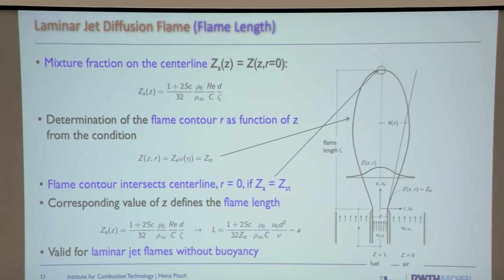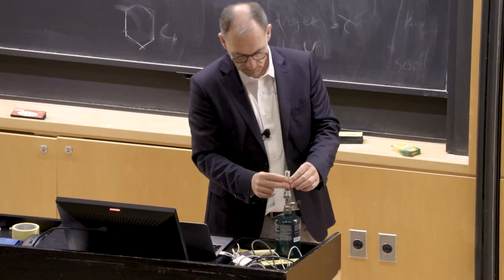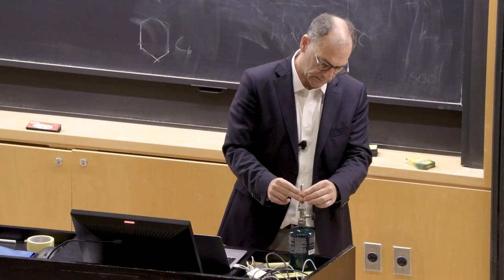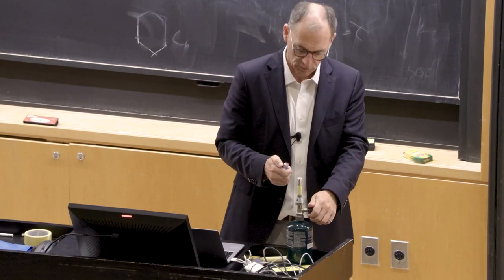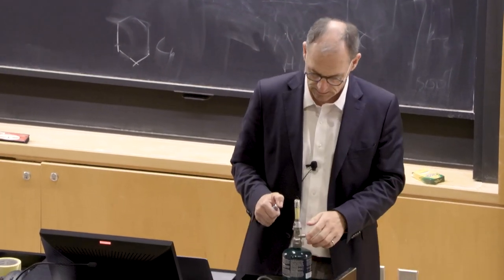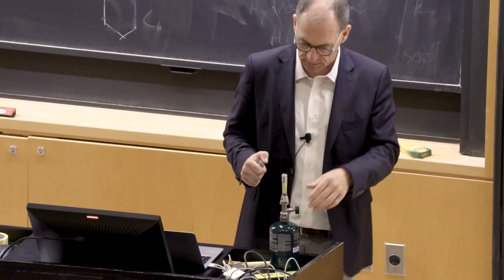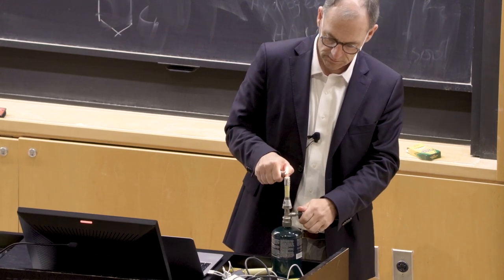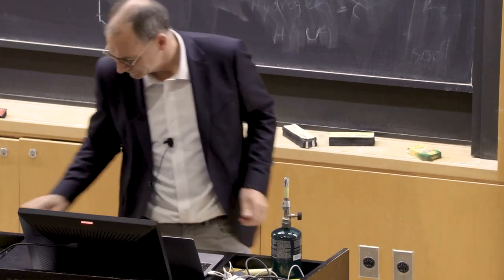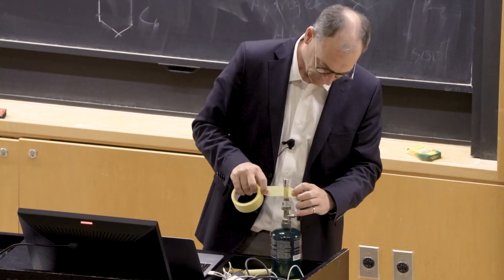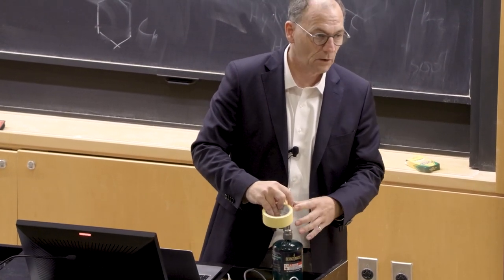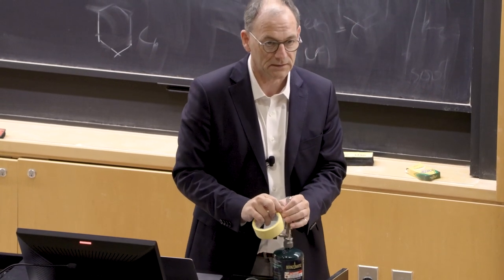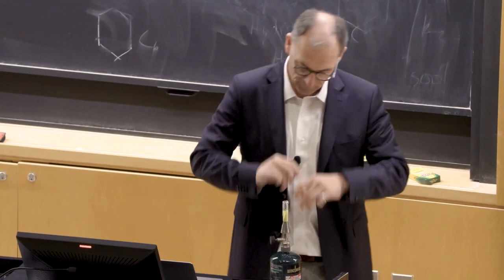I have a burner here with tin foil on top and a small hole made with a needle to get a very small nozzle diameter, so I can achieve a large Reynolds number with the same flow rate. Let's turn this on. Here's the laminar flame; now I increase the Reynolds number and the flame gets longer.